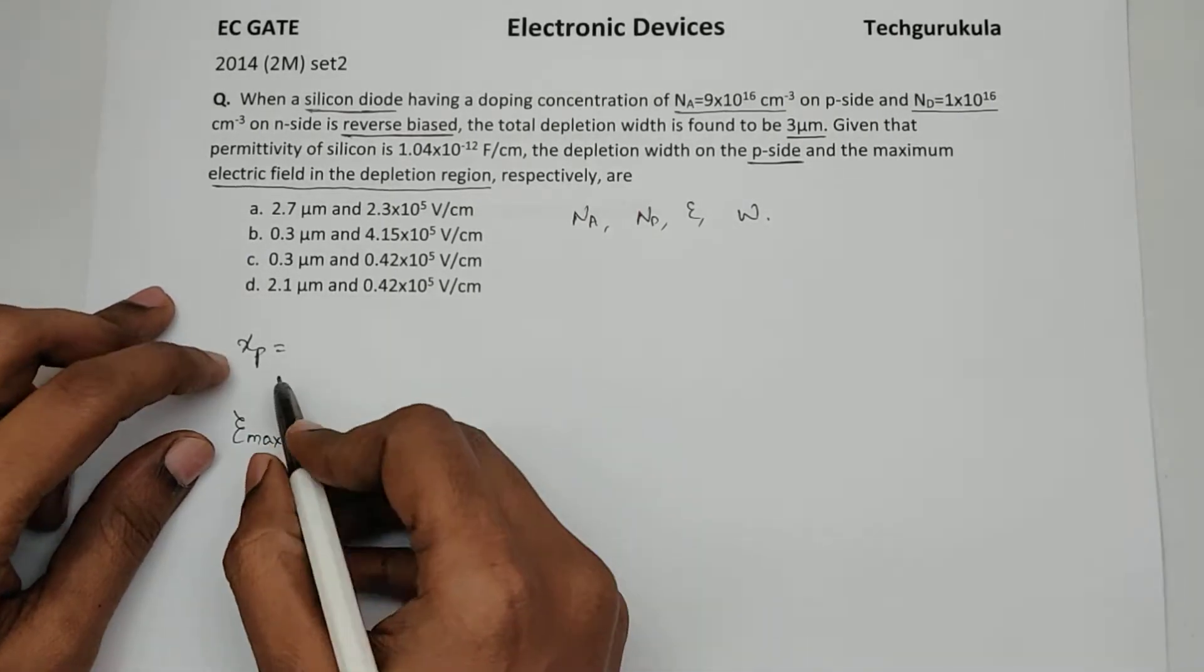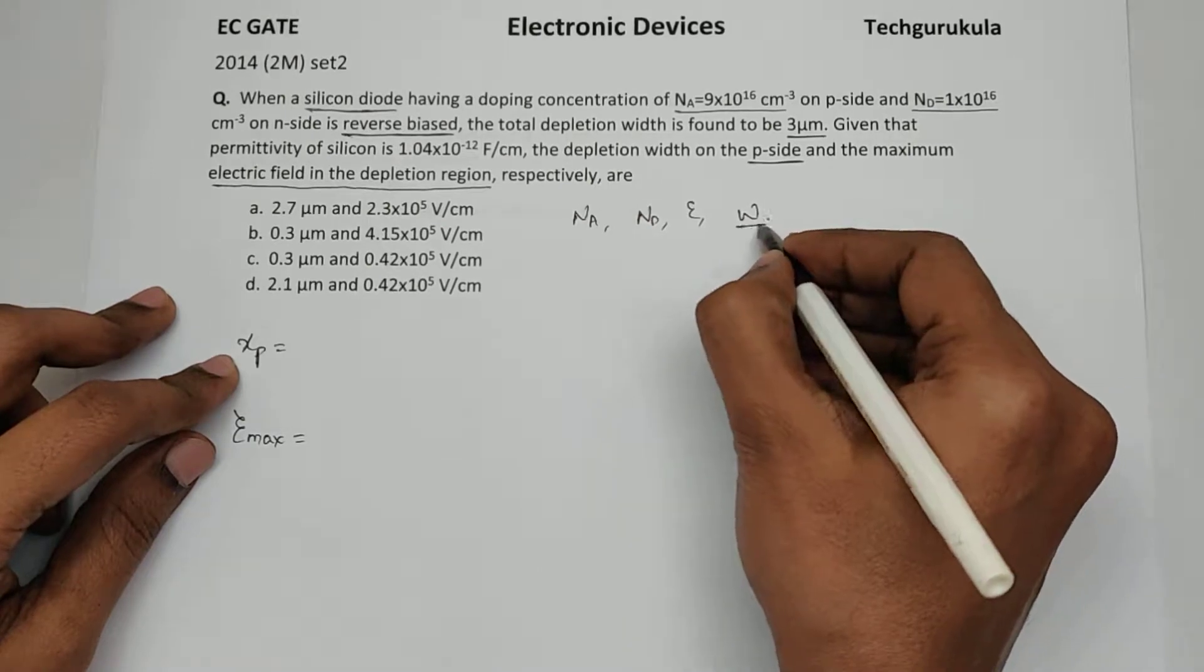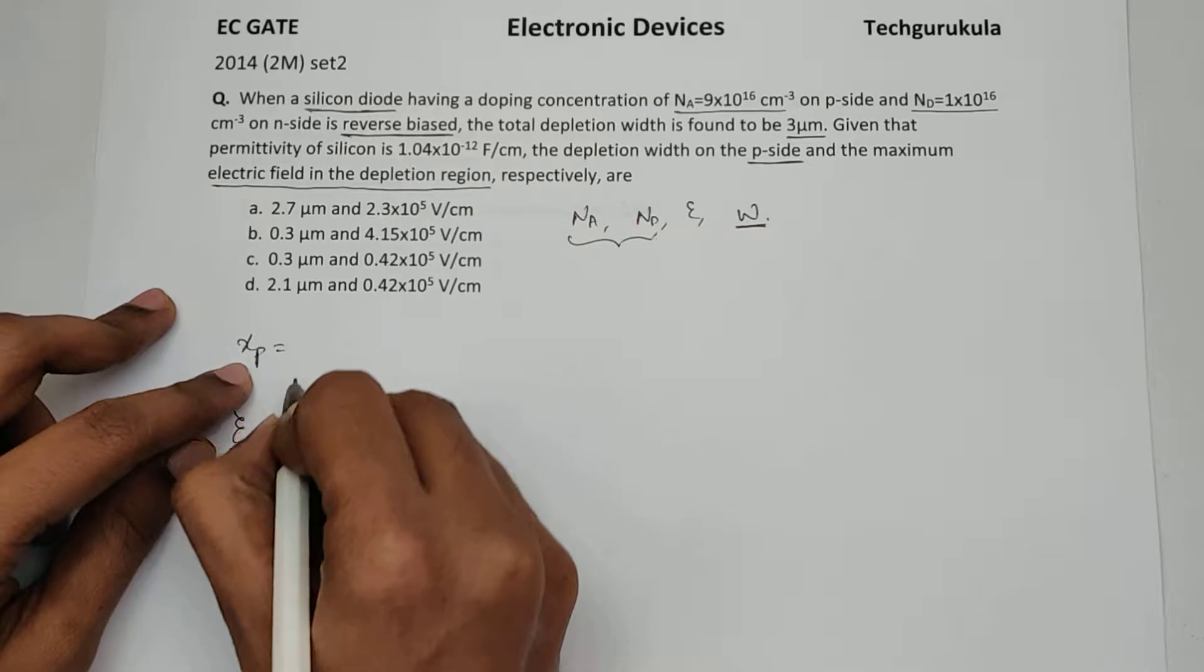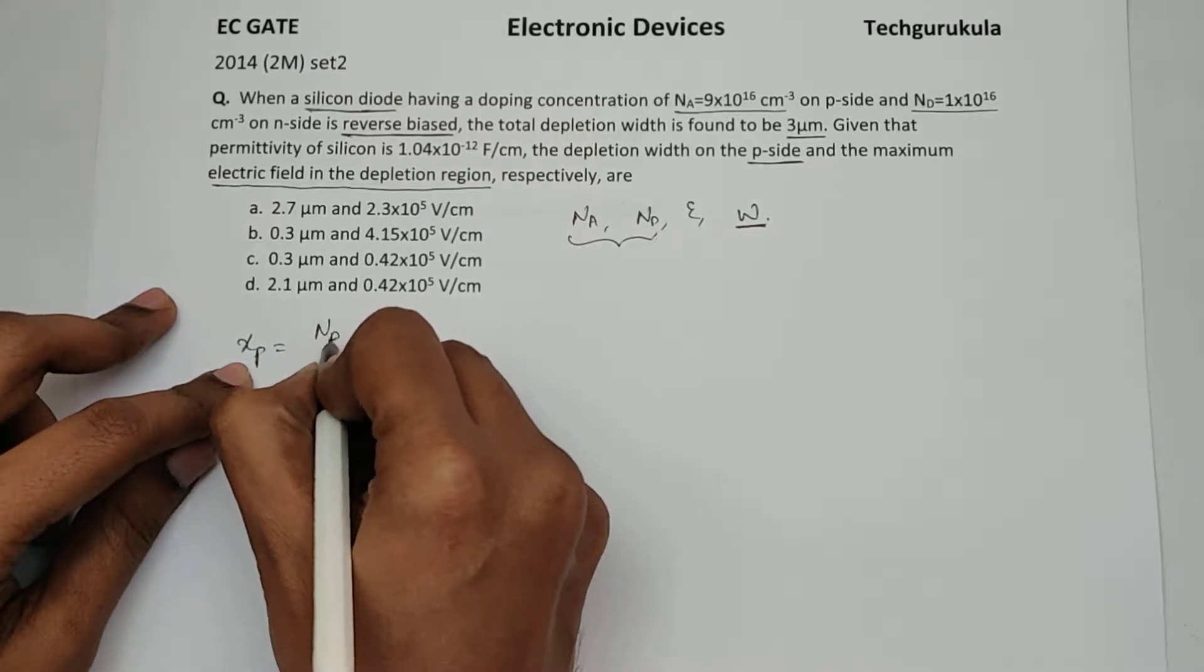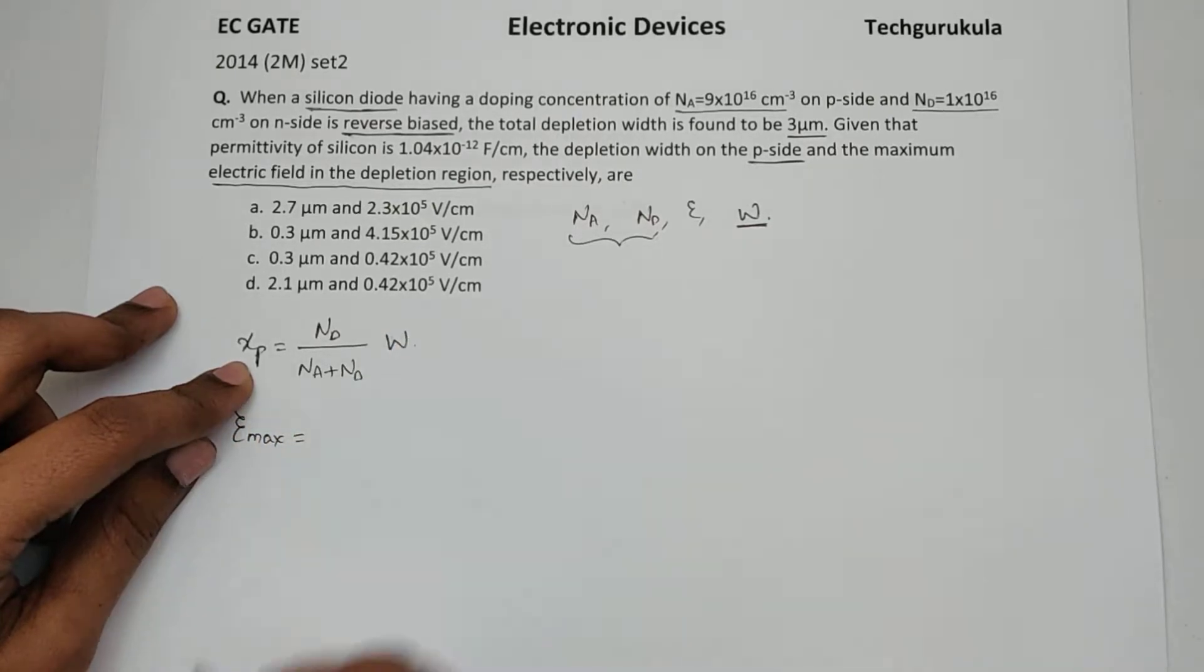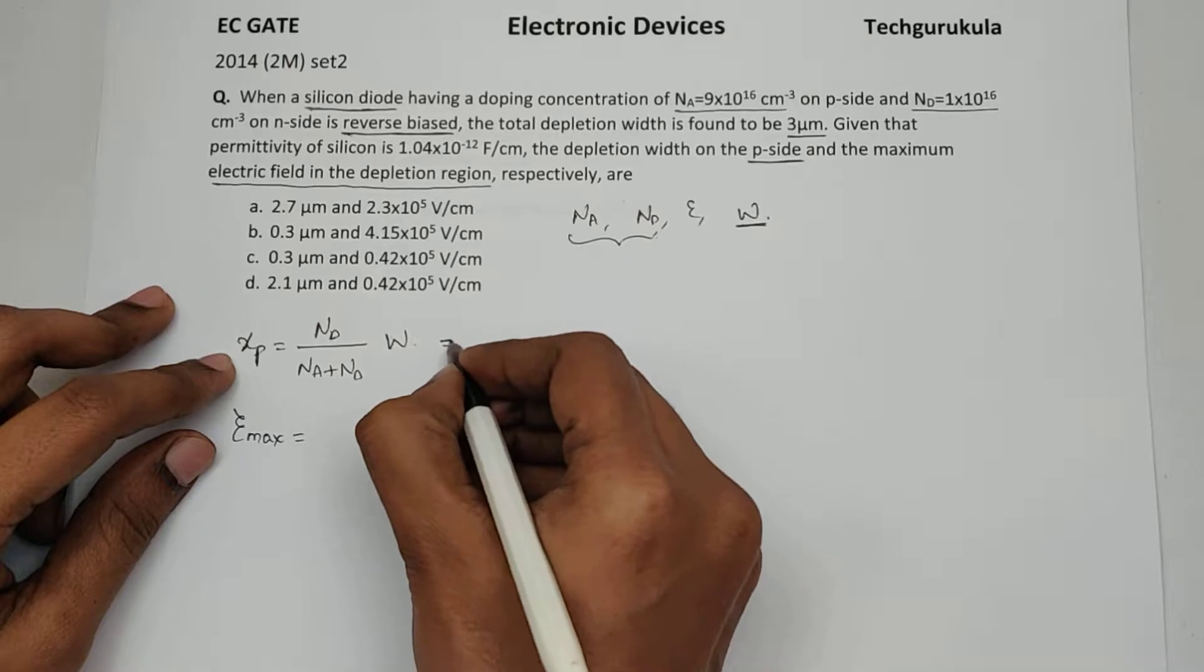We know Xp, the depletion width on the P side is related to the total depletion width based on the doping concentrations. That is given by Xp equals Nd over Na plus Nd times W. Let us write it here.